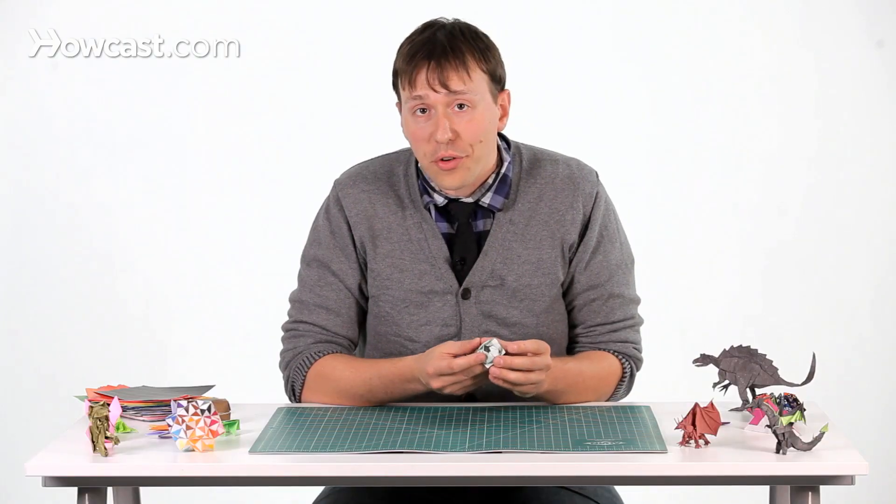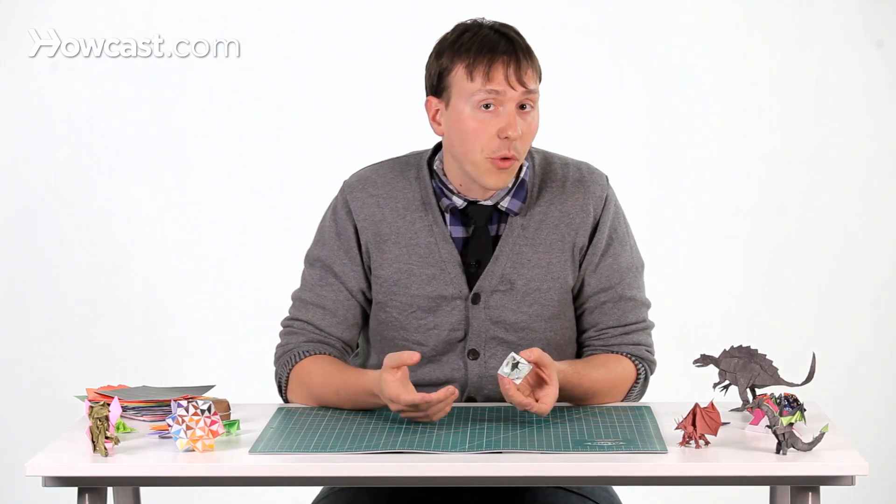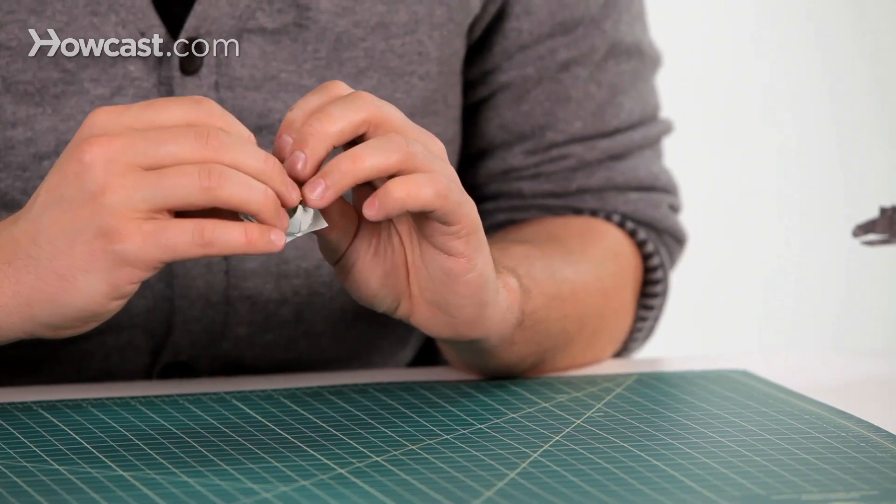In order to get a colored version of the lotus flower, just start with the paper the opposite direction and then do all the same folds. This makes a white one, as I showed you on the backside. Alright, bye guys.